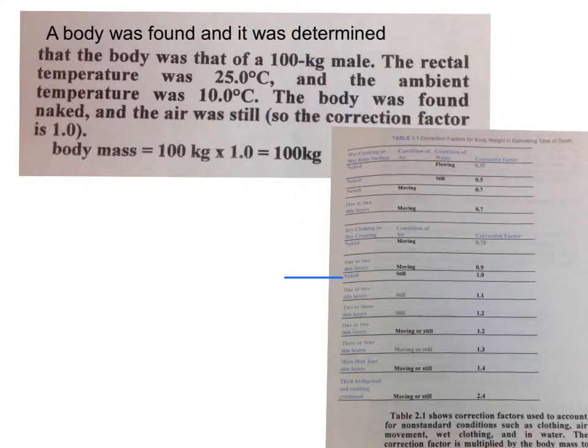Here's the scenario that we have to solve. A body was found and it was determined that the body was that of a 100 kilogram male. The rectal temperature was 25 degrees Celsius and the ambient temperature was 10 degrees Celsius. The body was found naked and the air was still.